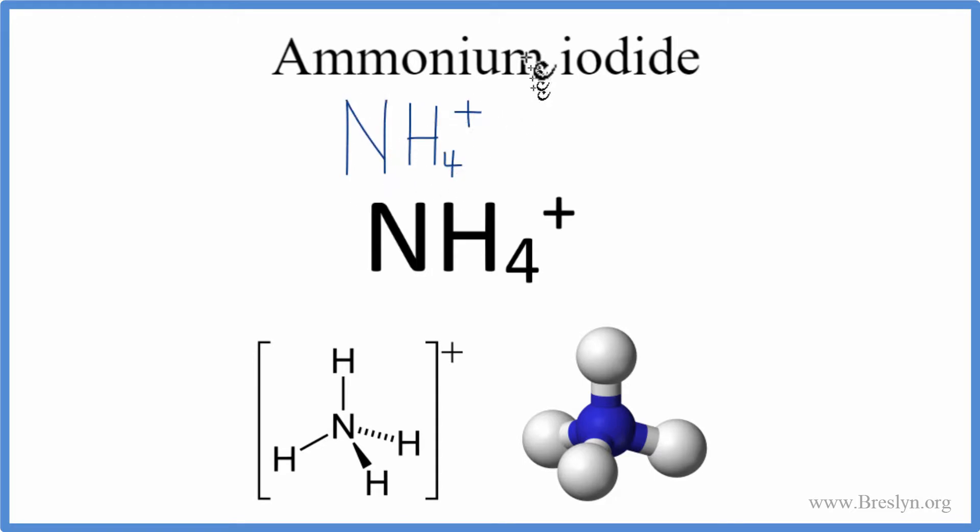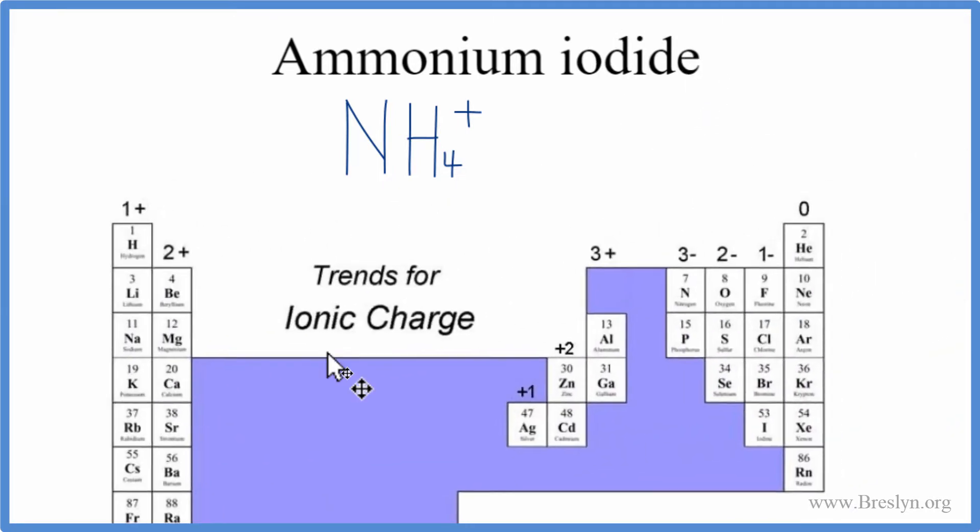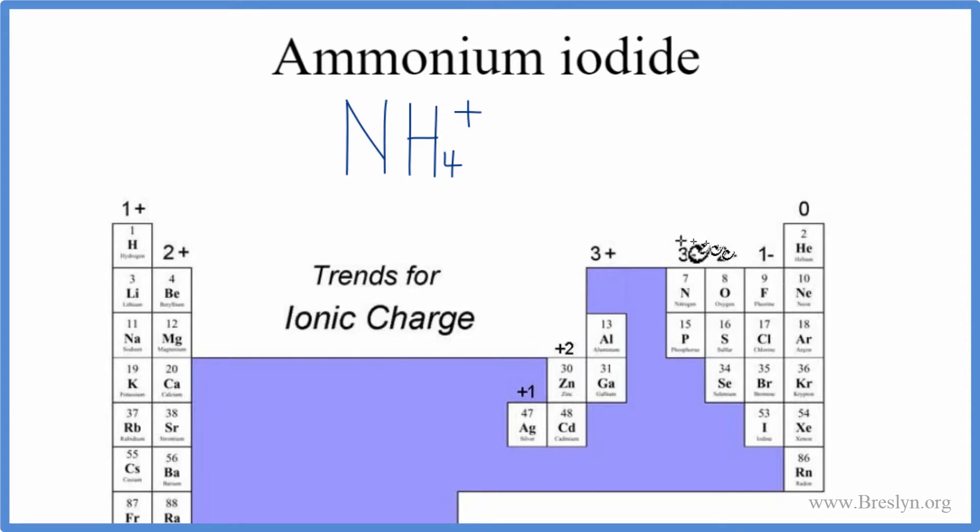And then we need to write the iodide ion. That's from iodine, and we can check the periodic table here using the trend for ionic charge, and iodine, that's a halogen group 17 or 7A. It's way down here. It's a 1-, like all of the halogens.